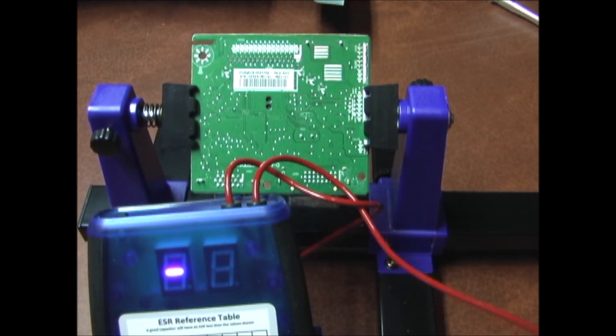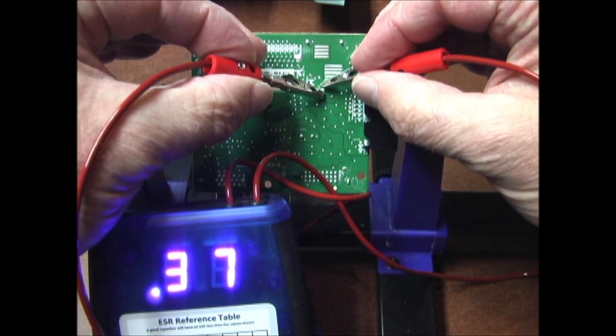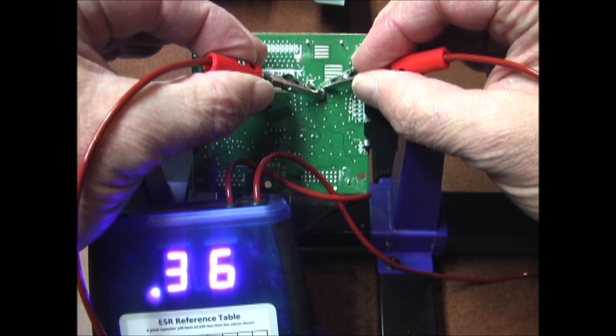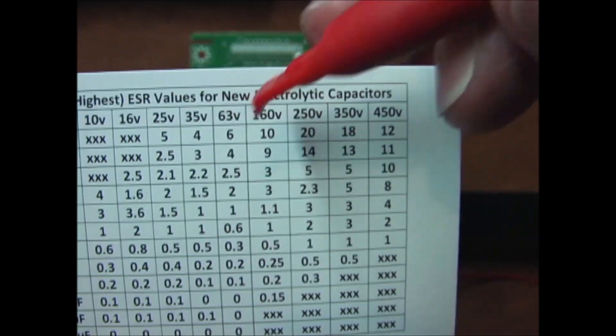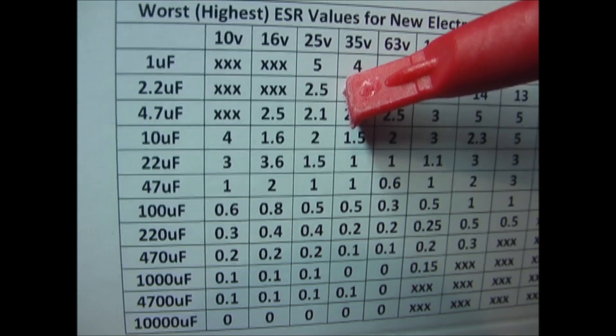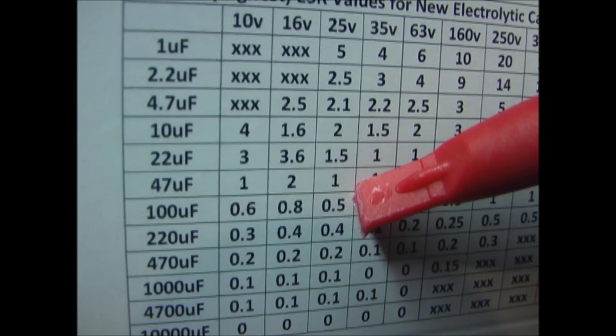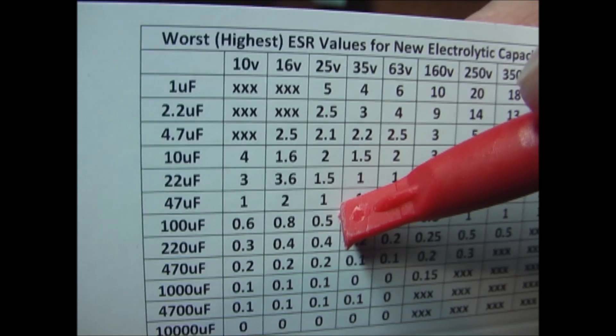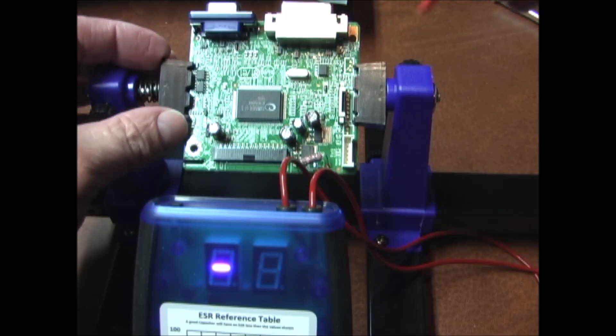That capacitor is right over here. Touch the leads onto there and we're getting about 0.36 ohms. This chart is provided with the ESR meter. That capacitor is 25 volts and 100 microfarads. Going down the column, you see it should be a maximum of 0.5 ohms. It was 0.36, so it is under the limit. That one is good.